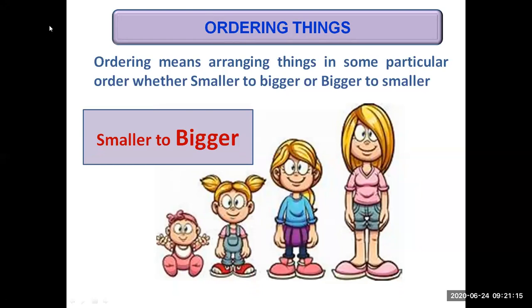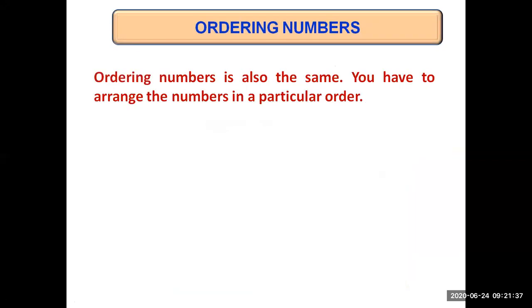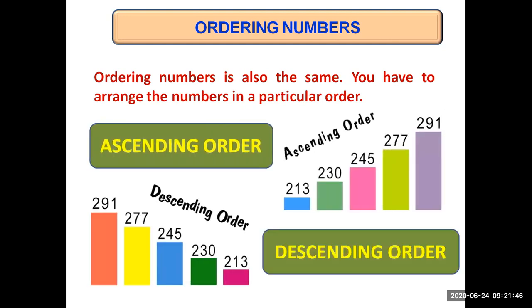Smaller to bigger means the smallest thing is placed at the first place and then stepwise we go towards the bigger number. Bigger to smaller means the biggest thing is placed at the first place and then we go towards the smallest one. Ordering numbers is the same — you just have to arrange numbers in a particular order. We call them ascending order and descending order.